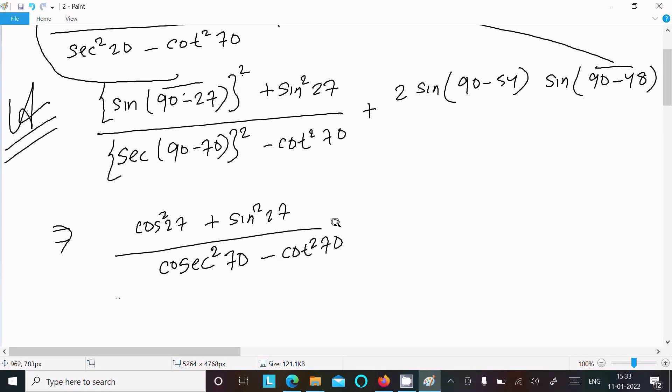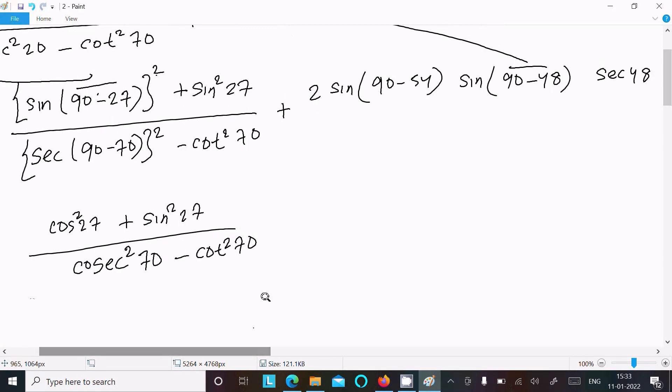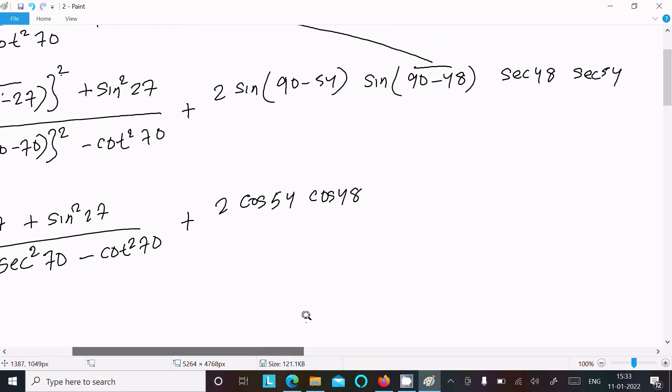Now cos square 70. Thereafter, 2 sin 90 minus theta that is equal to cos theta. So cos 54, sin 90 minus 48 that is equal to cos 48.